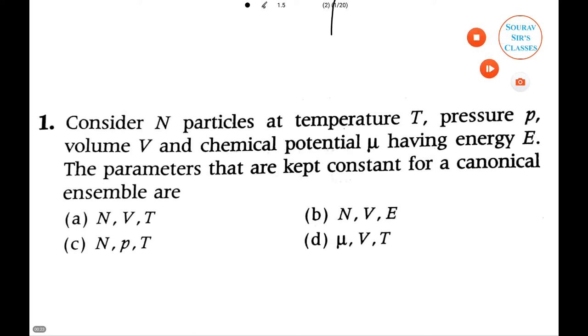The first question is: Consider N particles at temperature T, pressure P, volume V, and chemical potential μ having energy E. The parameters that are kept constant for a canonical ensemble are what?